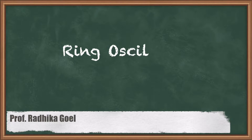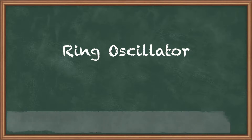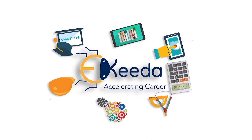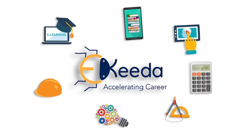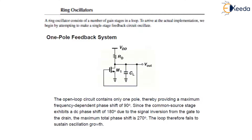Hello everyone. In this lecture we will discuss ring oscillator, one pole and two pole feedback system. Ring oscillator consists of a number of gain stages in a loop, and to arrive at the actual implementation, we first begin by attempting to make a single stage feedback circuit to oscillate.